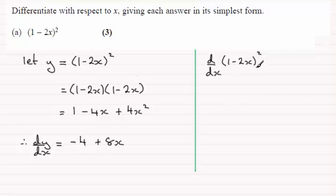Okay well with this notation what we would do is expand the bracket. So we'd have d by dx of and expanding the bracket we've just got 1 minus 4x plus 4x squared. And then differentiating this in the usual way just gives us minus 4 plus 8x.